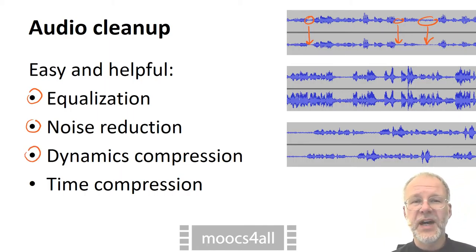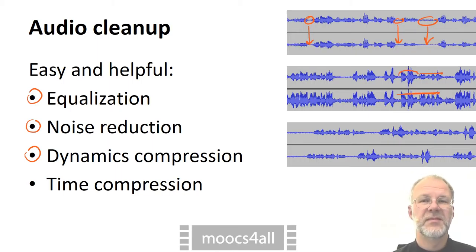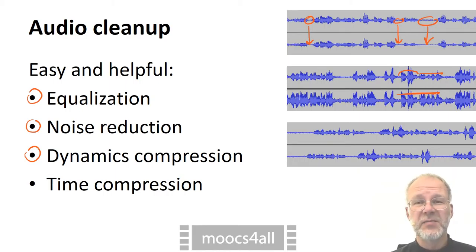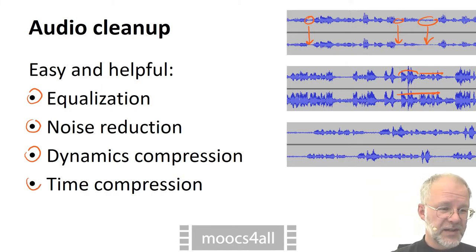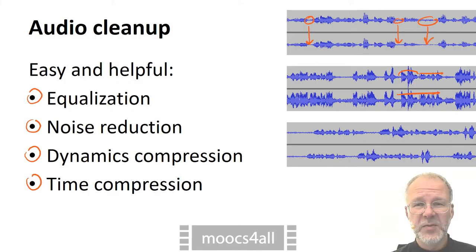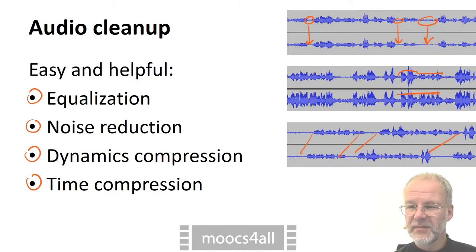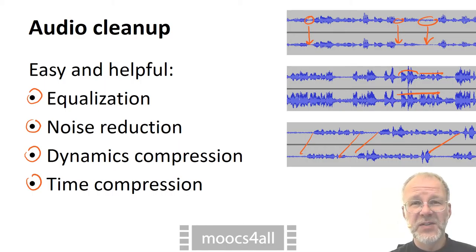All you need is to provide the program with a fingerprint of the noise — that is, a second or two of that noise with no other sound at the same time. Dynamics compression evens out the volume of louder and quieter passages. This is what you need, for instance, when a speaker has used a handheld microphone but has kept changing the distance between mouth and microphone. Finally, if you find that the speech is a little plodding, you may want to speed up the video by some percent. On the audio processing side, this means that the pitch has to be corrected to still sound normal — otherwise, for extreme settings, the voice turns into that of Mickey Mouse.